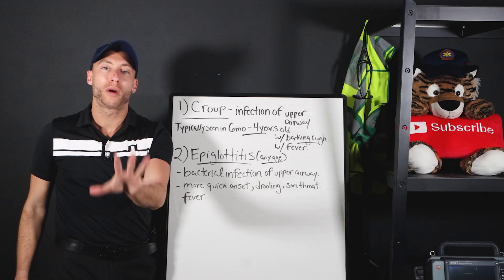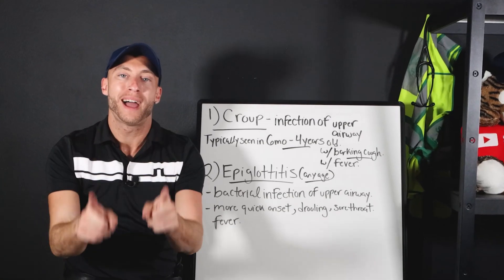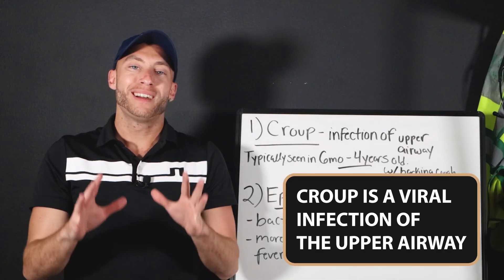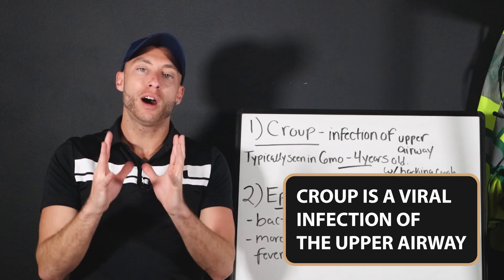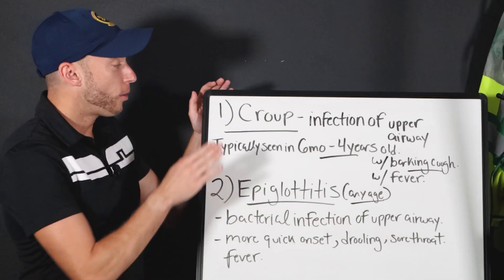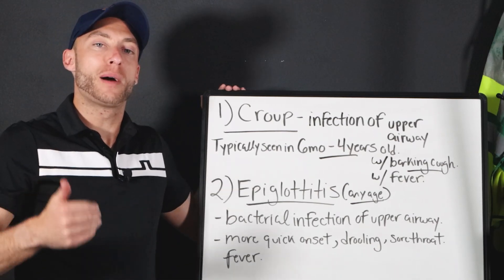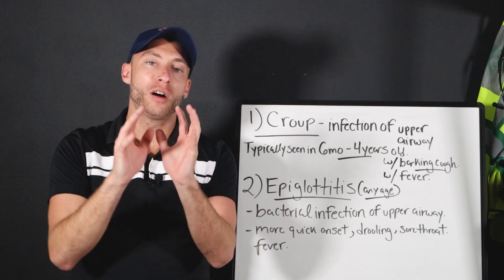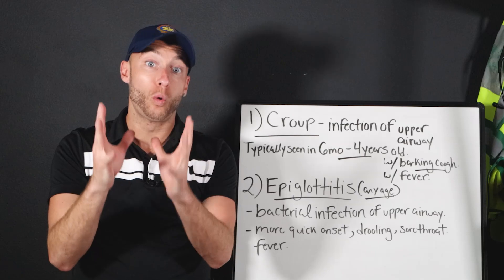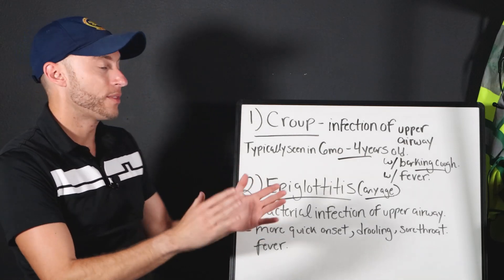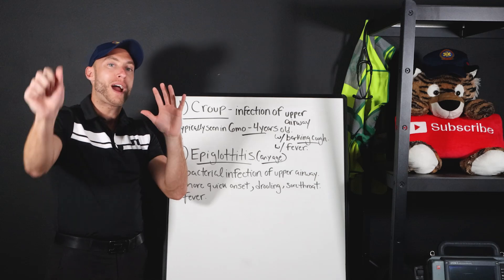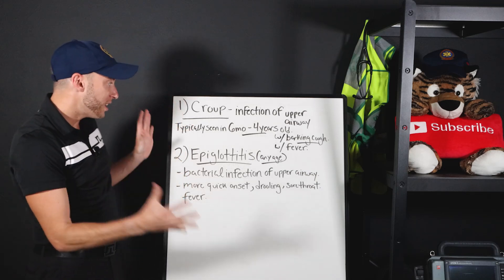There are five main causes of stridor you need to know to pass your test. Number one is croup — a viral infection of the upper airway. Both croup and epiglottitis cause swelling of the area around the glottic opening, your vocal cords. This is why it's so sinister: if our vocal cords go completely shut, we can't breathe.